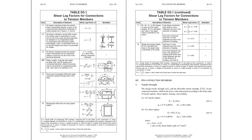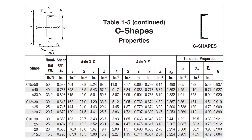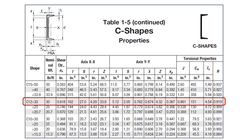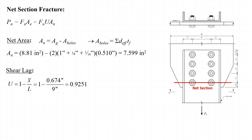Next, we'll turn to Table D3.1 of the AISC specification to determine the shear lag reduction coefficient U. Case two is the most appropriate for a channel bolted through its web, and U is taken as 1 minus X-bar over L. In that equation, X-bar is the connection eccentricity. Looking at the section properties for the C12 by 30, X-bar — measured from the faying surface of the connection to the centroid of the channel — is tabulated as 0.674 inches. Substituting in X-bar equals 0.674 inches and recognizing that the connection has a length of 9 inches, we calculate the shear lag reduction coefficient U as 0.9251.